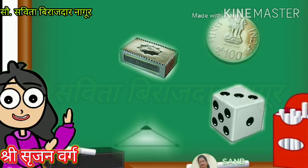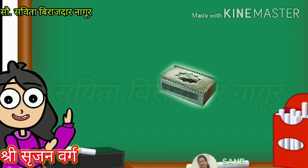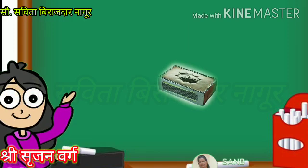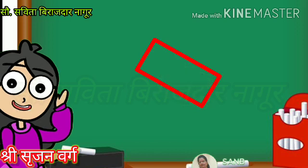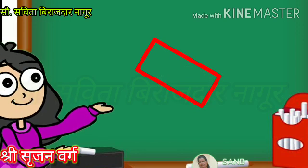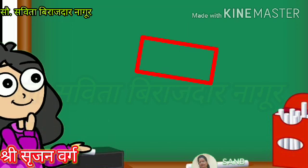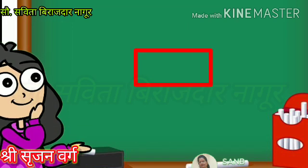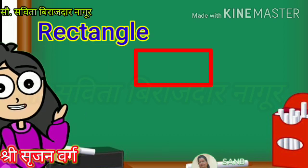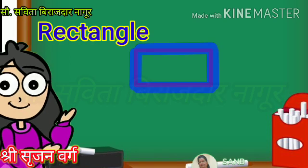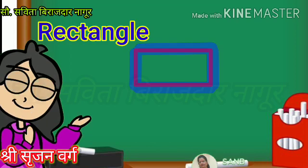Take a matchbox. Place it on the paper. Hold it firmly. Then draw lines by moving your pencil along the edges. Now remove the object. Observe the shape that you drew on your paper. Which shape is this? It is a rectangle. Count each side — one, two, three, four. Rectangle has four sides.